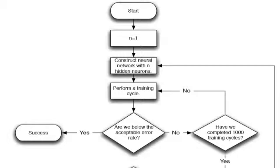We check to see if we are below the acceptable error rate. If we are, then we're successful. We're done. If we have not, then we check to see if we have completed 1,000 training cycles. 1,000 training cycles is just what we've arbitrarily chosen is how far we want to train.